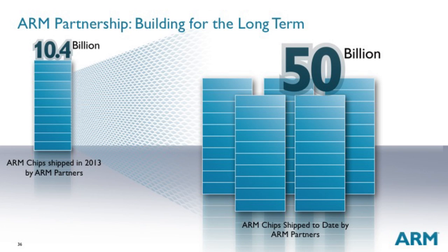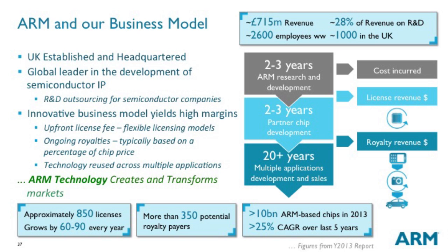ARM technology is in products everywhere. ARM doesn't make these products, and doesn't even make the chips in them — even the chip with an ARM on it isn't made by ARM. You delve inside and find there's the CPU part, and that's delivered by ARM. We also do the cell libraries and a few other bits, operating right down inside there, but operating in all of those chips. Almost all of the chips inside your smartphone have got ARM technology in them. Last year we shipped 10 billion ARM CPUs — that's more than one for every person on the planet — and 50 billion shipped so far. We had only shipped 10 billion ever in 2008, so we've shipped 40 billion between 2008 and today, growing at 25% per annum.